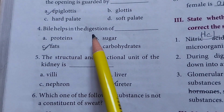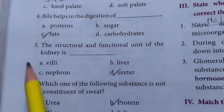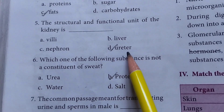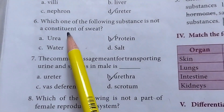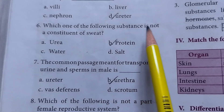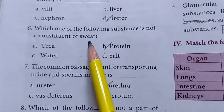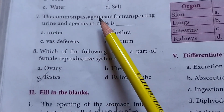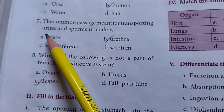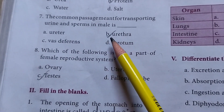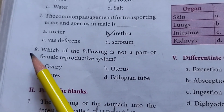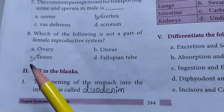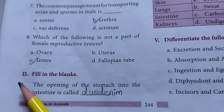Question 4: Bile helps in the digestion of fats. Question 5: The structural and functional unit of the kidney is the ureter. Question 6: Which one of the following substances is not a constituent of sweat? Answer: Protein. Question 7: The common passage for transporting urine and sperm in males is the urethra.